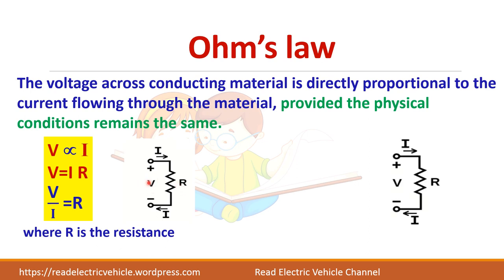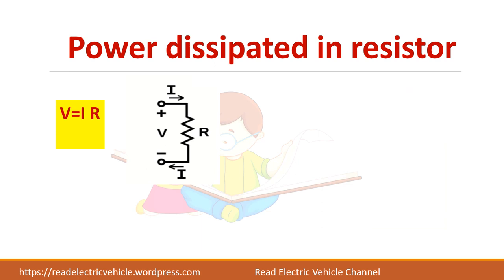If I increase the voltage to 2 times V — suppose from 100 volts to 200 volts — then the current will also get doubled. So 2V divided by 2I still equals R, which is exactly what Ohm's Law states: V equals IR. Let us also look at the power dissipated in a system.